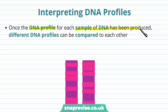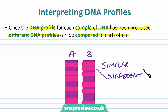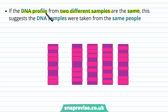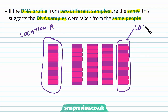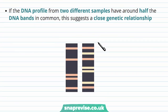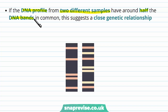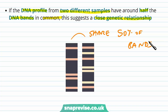Once the DNA profile for each sample of DNA has been produced, the different DNA profiles can be compared to each other. When we compare two individuals' DNA profiles, we can see similarities and differences in the genome. People who are more similar in their genetics will have a more similar DNA profile. If the DNA profiles from two different samples are very much the same, this suggests the DNA samples were taken from the same person. If the DNA profiles from two different samples have around half the DNA bands in common, this suggests a close genetic relationship, because the alleles and genes have been shared or inherited.